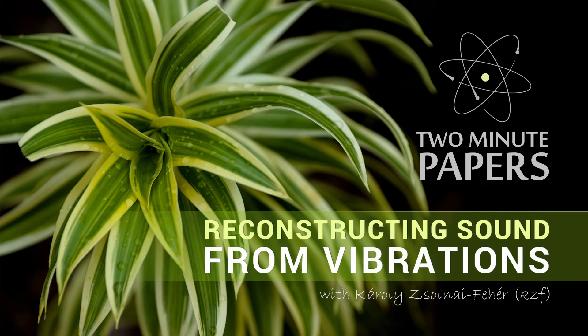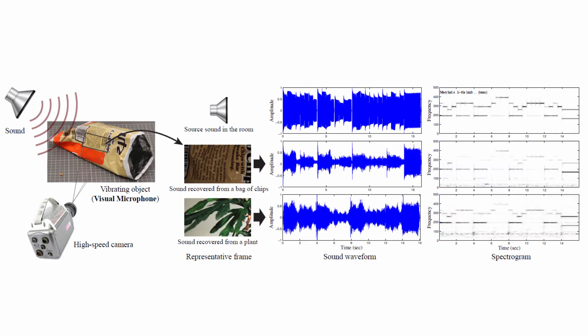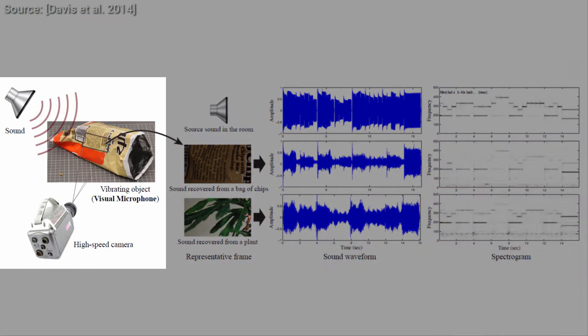Dear Fellow Scholars, this is Two Minute Papers with Károly Zsolnai-Fehér. The work we are going to discuss today is about visual microphones. What does this mean exactly? The influence of sound creates surface vibrations in many objects, such as plants or a bag of chips, foil containers, water, and even bricks. They thereby work as visual microphones.